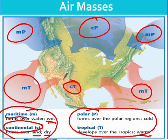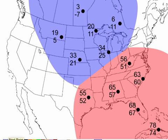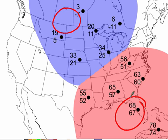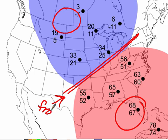Air masses get their characteristics on whether they're going to be warm, cold, wet, or dry. When these air masses meet — for example, a cold air mass and a warm air mass — that boundary between them is called a front. The type of front that forms depends on which air mass is stronger. When you think of a front, think of a fight: the two air masses are fighting for which one is going to be stronger.